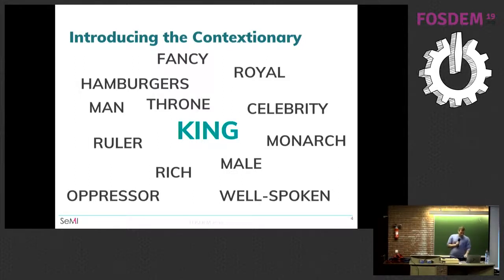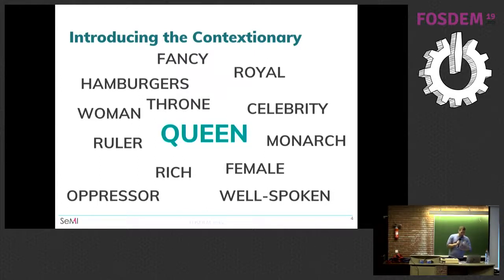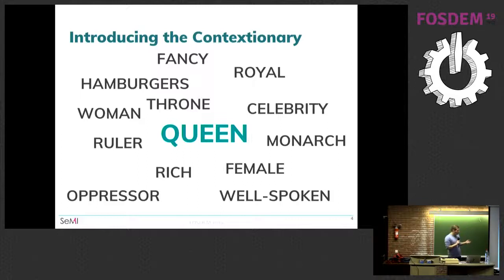One operation I've done here is taking 'man' and 'male' and subtracting them, then adding the word 'woman' or 'female.' Then it's very intuitive to us that the word 'king' becomes the word 'queen' if all the rest of the context is the same. This is something that's traditionally been very hard for computers, and the contextionary uses that context to make these kinds of things very easy.